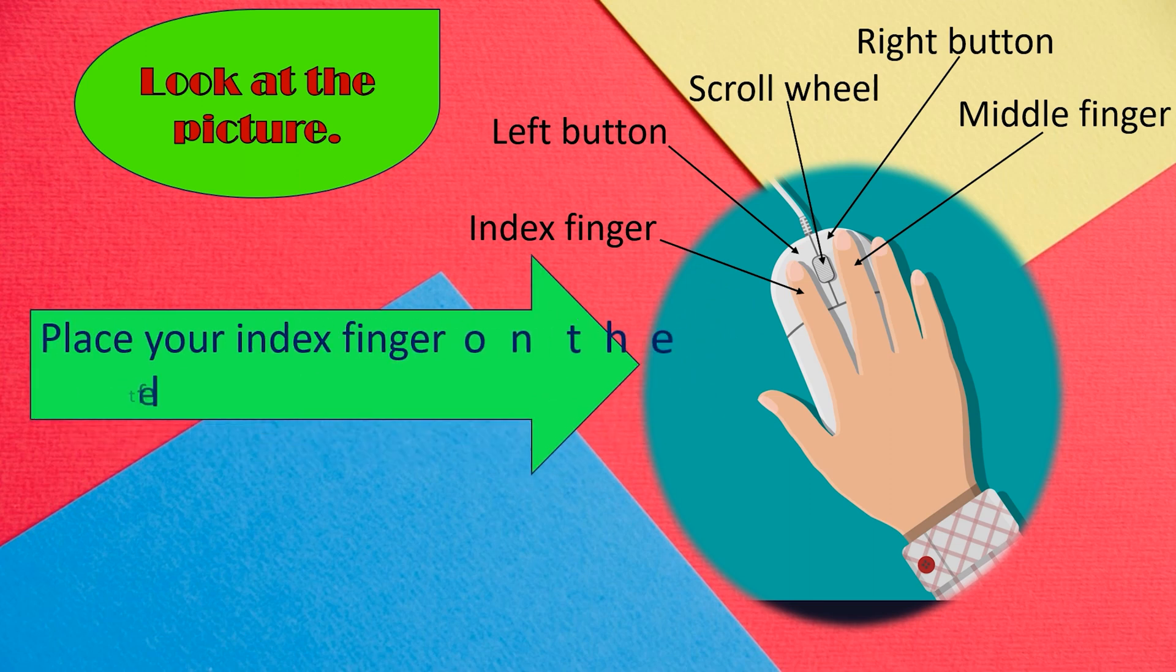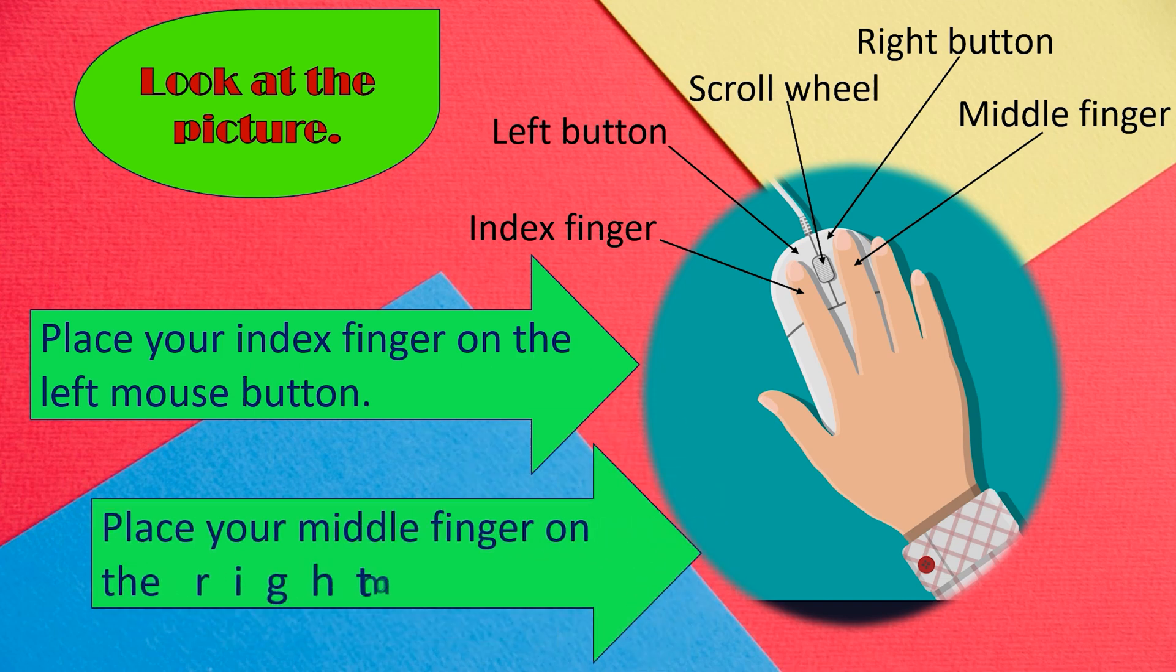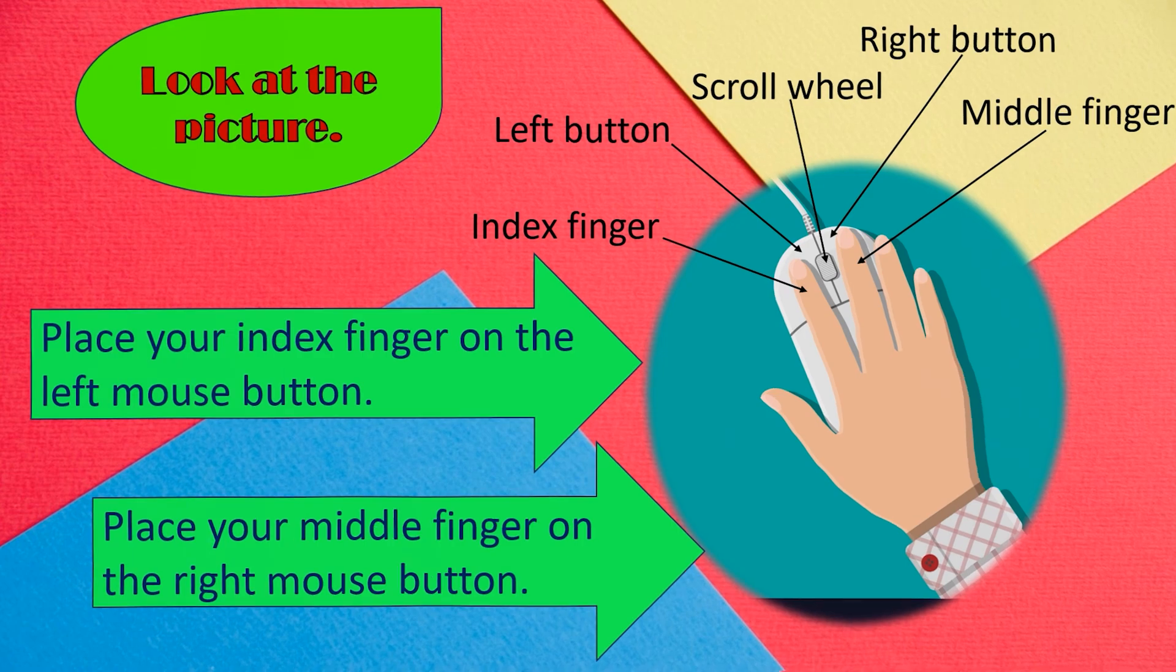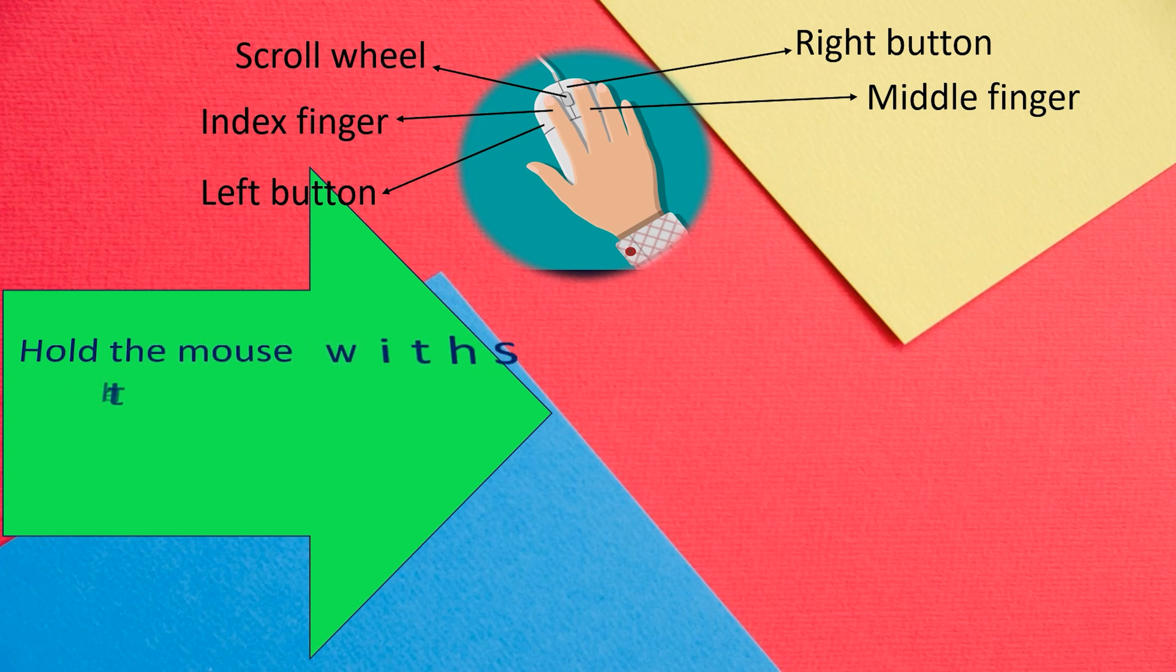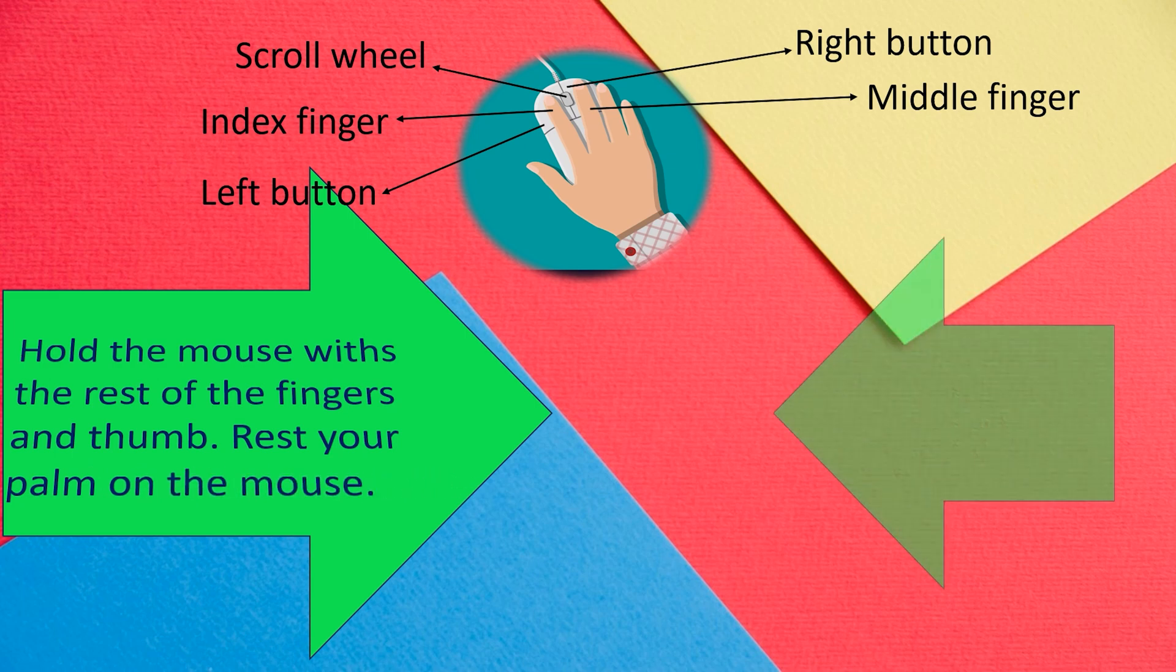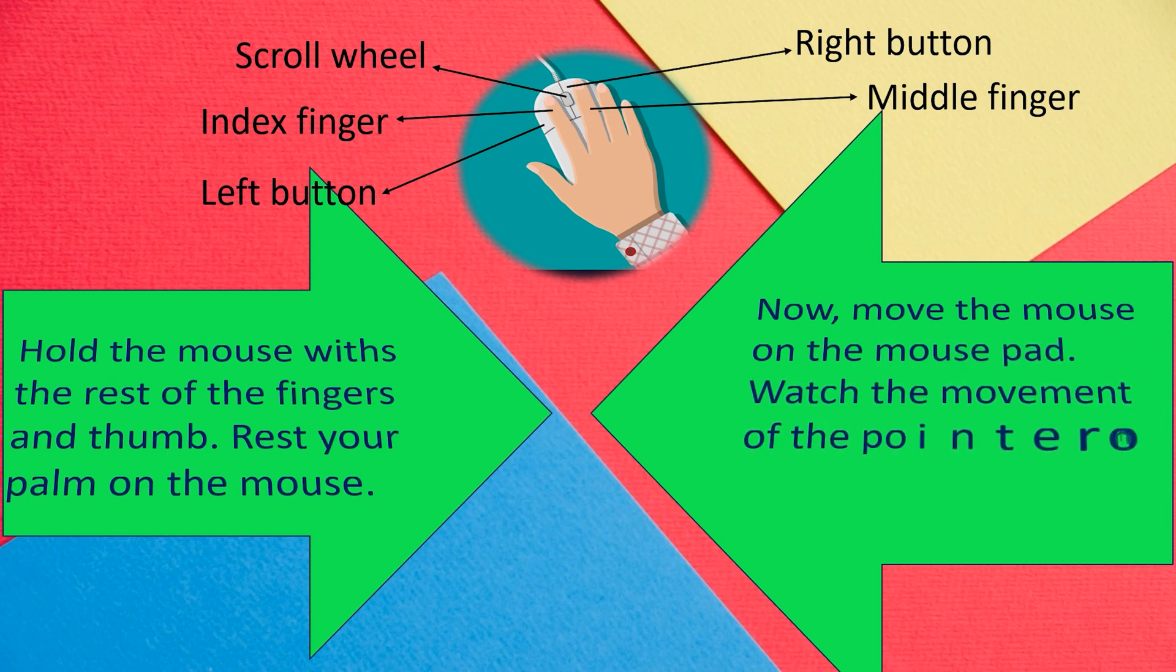Place your index finger on the left mouse button. Place your middle finger on the right mouse button. Hold the mouse with the rest of the fingers and thumb. Rest your palm on the mouse. Now, move the mouse on the mouse pad. Watch the movement of the pointer on the screen as you move the mouse.